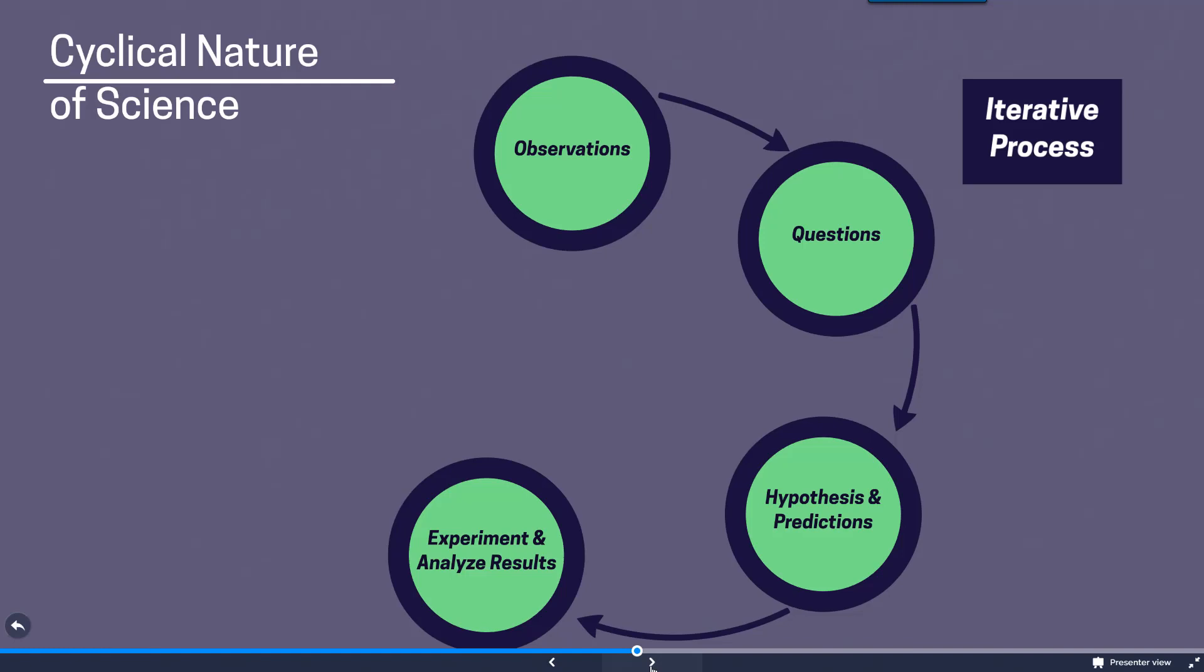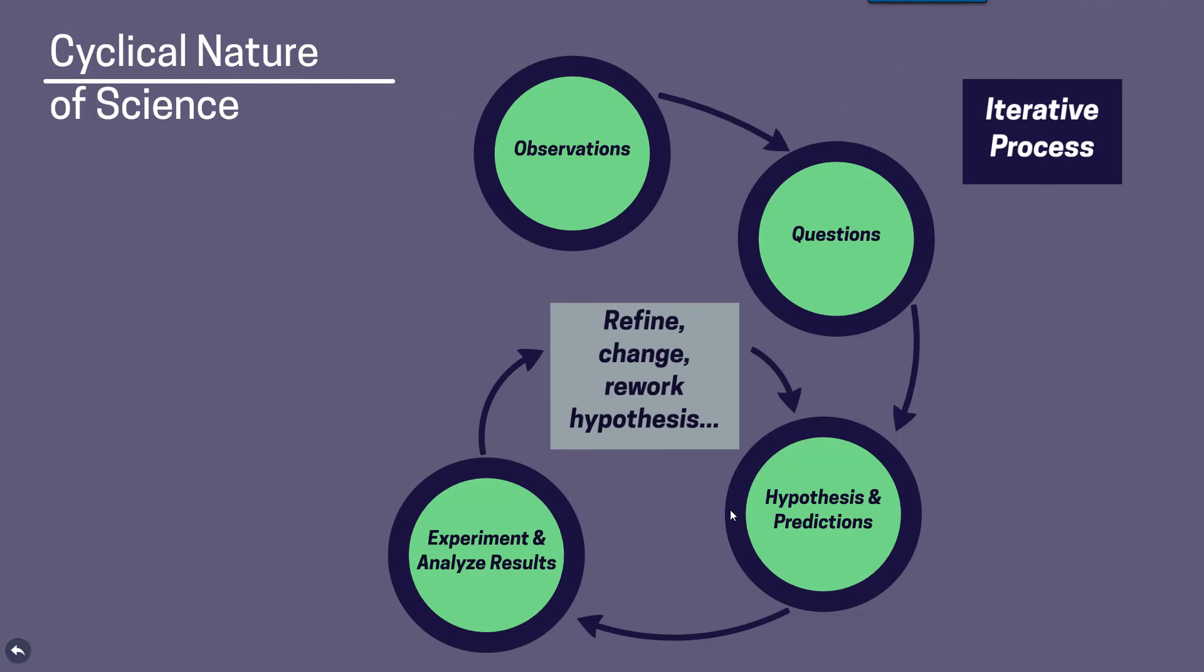But more often than not what will happen is that the outcome of those experiments and results is going to require that the scientists go back and refine, change, or rework their hypothesis. They may actually go back and even change their question again. So there's a lot happening within this part of the cycle before they move on to the next steps.